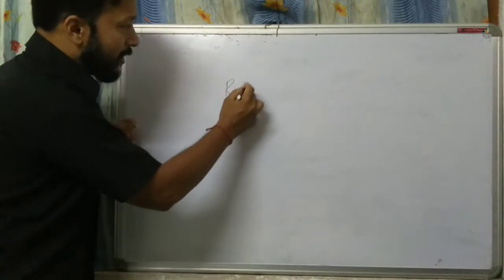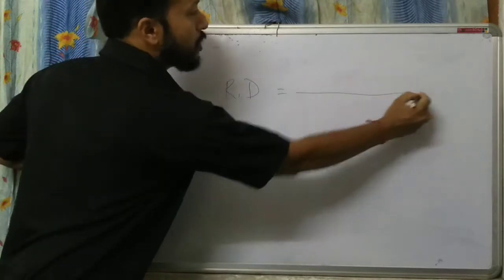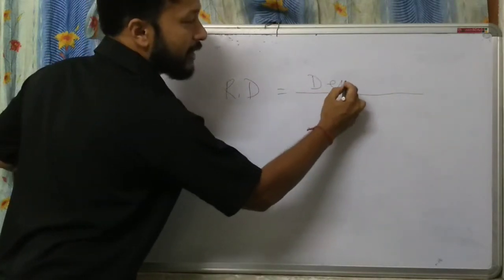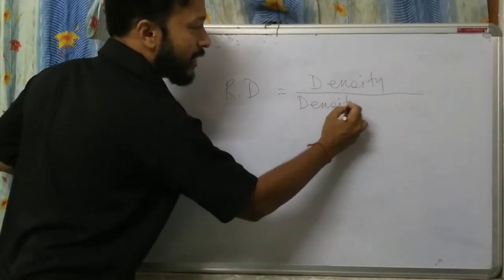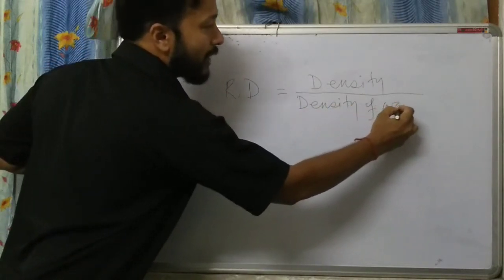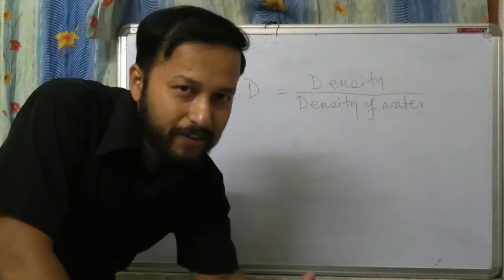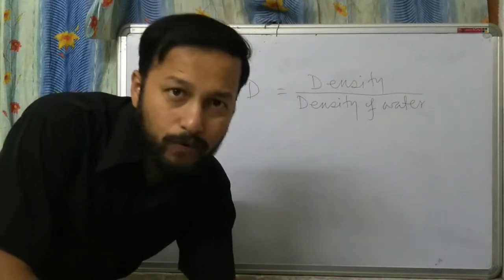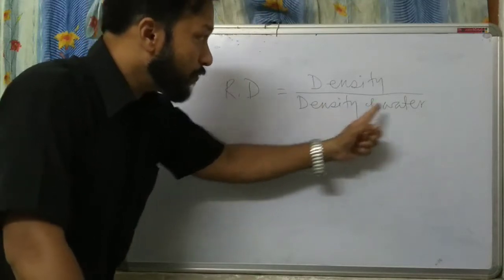Now if you want to find the relative density of the same stone, relative density equals density of the object divided by density of water.